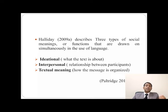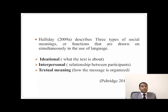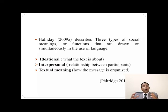Halliday describes three types of social meaning, which he also calls meta-functions, and all of them work together simultaneously in the production of language. There is the ideational meta-function, which means what the text is about. There is the interpersonal meta-function, which means what is the relationship between or among the participants who are producing the discourse. And then there is the textual meta-function — how the message is organized with the help of words, phrases, clauses, and sentences.